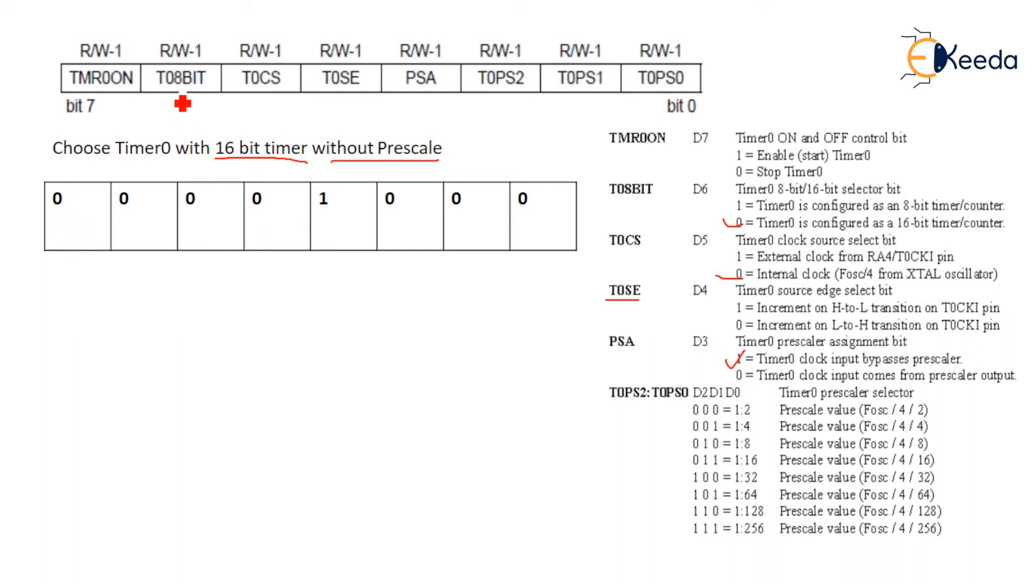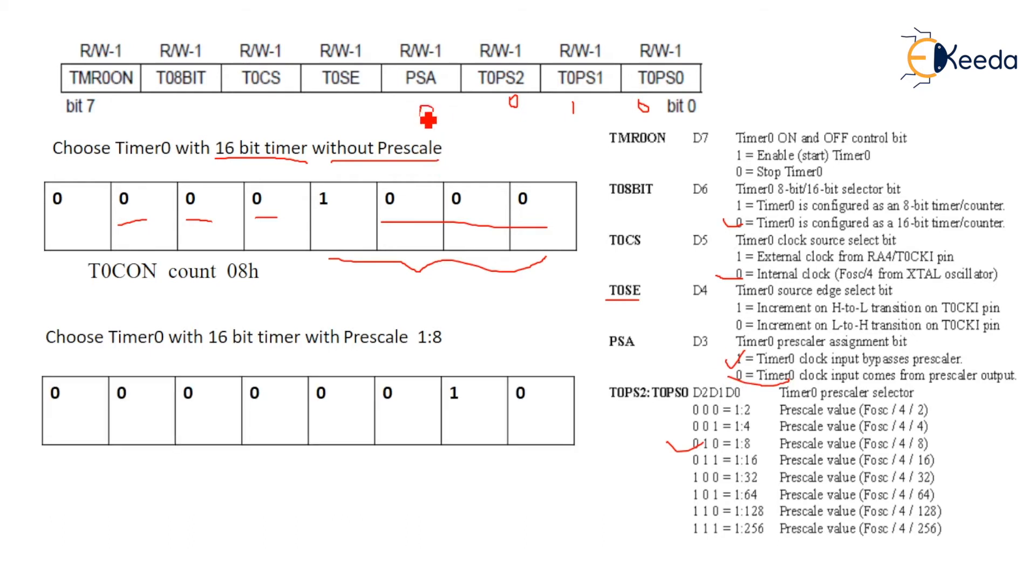So what will be the count of T0CON? First is 0, then later on we will set this to enable the timer but earlier we have to keep it as 0. Then we are using 16-bit so this comes as 0. We are using internal clock so this bit is 0. It is increment low to high so this one is 0. PSA - we are bypassing the prescaler so it comes with a 1, and the rest are 0s or don't care. Now T0CON count is 08h. If I choose Timer0 with 16-bit timer with prescaler 1:8, this combination gives 010. But I am using prescaler so this one will be 0, PSA will be 0. So your combination for T0CON will be count 02h.